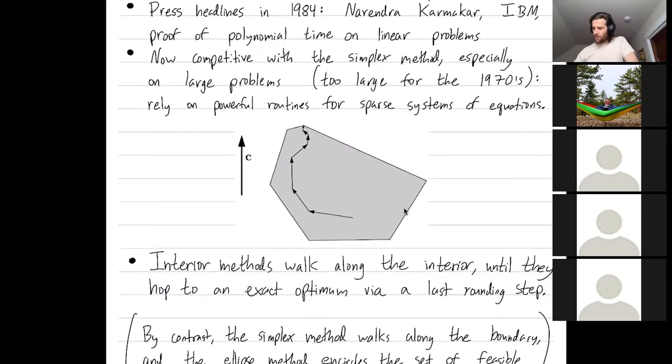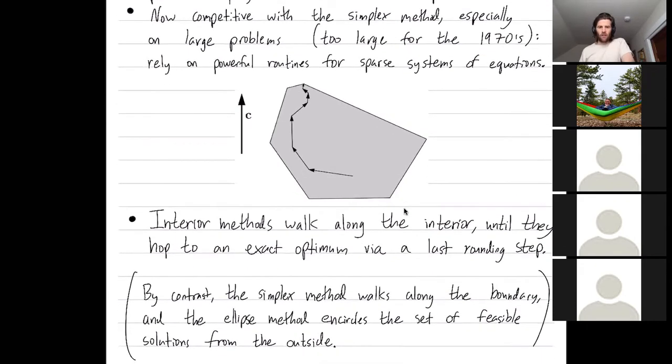I've drawn the picture you should have in mind. We have our polytope of the feasible region, and we have our direction vector C that we're trying to optimize. Interior point methods move along the interior until at the very end, during a last rounding step, they snap to the boundary to find an exact optimum.